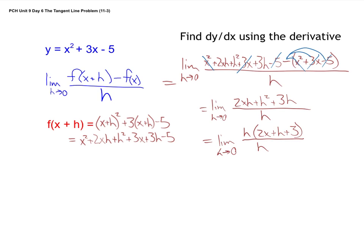So now we can cancel out the h's. And notice now we have something. It's not a rational function anymore. We can simply plug 0 in for h, and we get our derivative equal to 2x plus 3. Okay, so the derivative of y with respect to x is 2x plus 3.